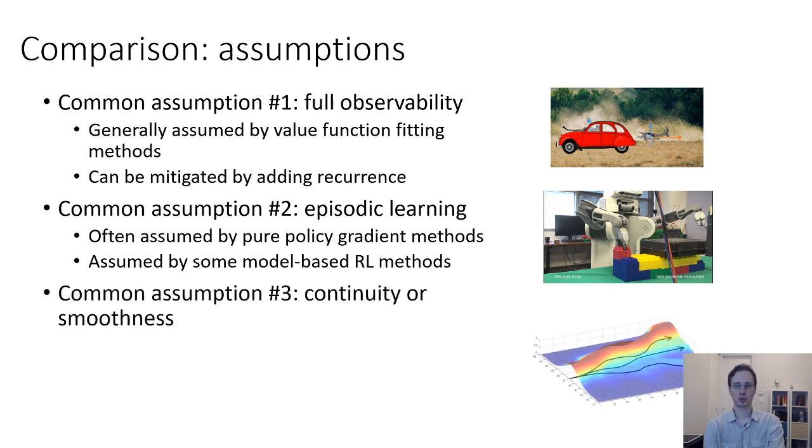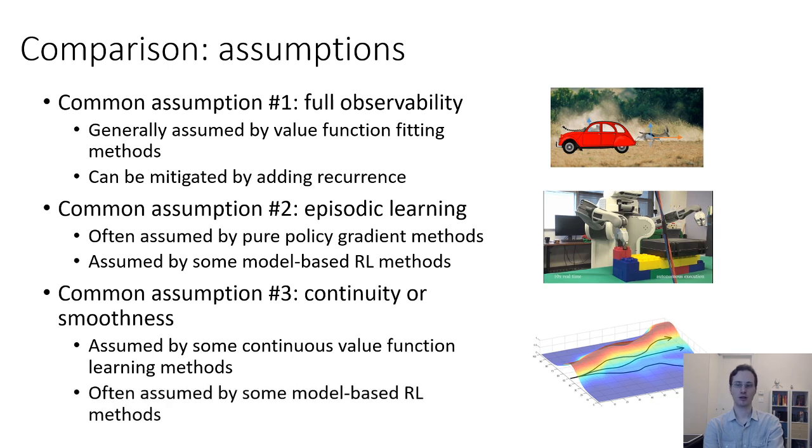Another common assumption, very common in model-based methods especially, is continuity or smoothness. This is assumed by some continuous value function learning methods, and it's often assumed by model-based RL methods derived from optimal control, which really require continuity or smoothness to work well. So, as we cover various RL algorithms over the next few weeks, I'll point out some of these assumptions as we go, but keep in mind that many of these methods will differ in the kinds of assumptions they make, and also how rigidly these assumptions must be satisfied, in order for those methods to work well in practice.